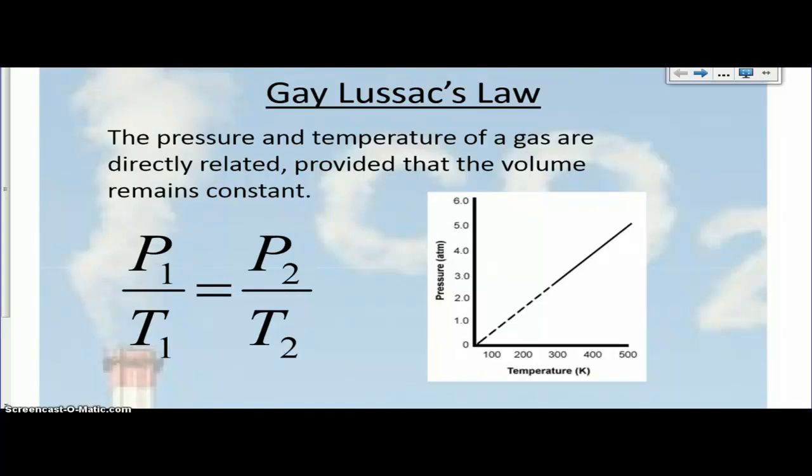This law states that pressure and temperature are directly related, given volume remains constant. The equation that describes this is P1 over T1 equals P2 over T2. Now let me note that temperature should always be in Kelvin when you're dealing with this.